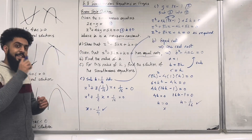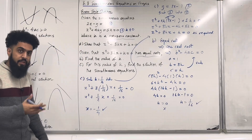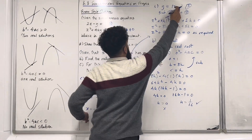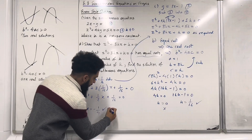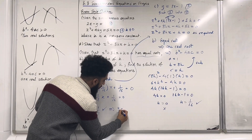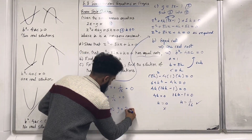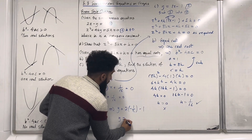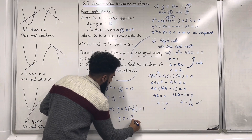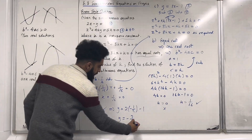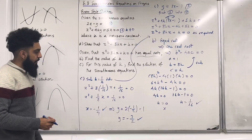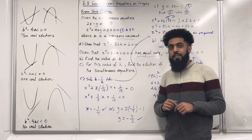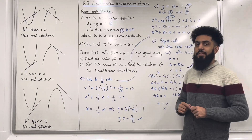To complete the solution, we need to find y. Substituting x equals minus 1 over 4 into equation 3 (y equals 2x minus 1): y equals 2 multiplied by minus 1 over 4, take away 1, giving y equals minus 3 over 2. That completes the exam-style question. If you found this video useful, please don't forget to subscribe.